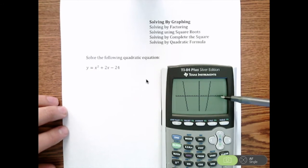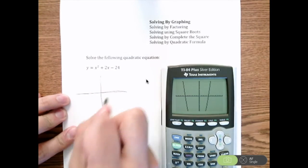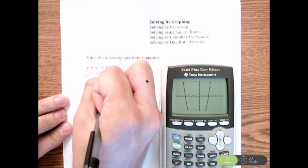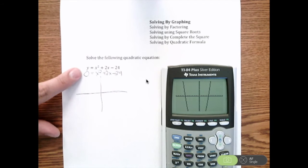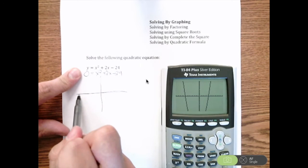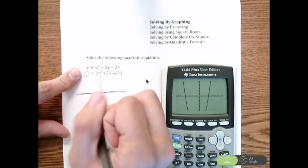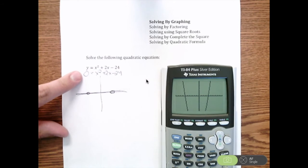When you're solving a quadratic equation, all you're looking for is when you have your x and y axis, we're really looking for when y is zero. So we have zero equals x squared plus 2x minus 24. The only time y is ever zero is when we're along the x axis. So what we're really looking for is the points where our graph intersects the x axis.